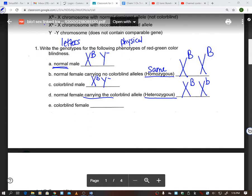A colorblind female. So if I'm a colorblind female, if I'm a female, I'm XX. If you're colorblind, you have to be two lowercase b's, right? As soon as I have that capital B, I'm not colorblind. So it's got to be two lowercase b's.